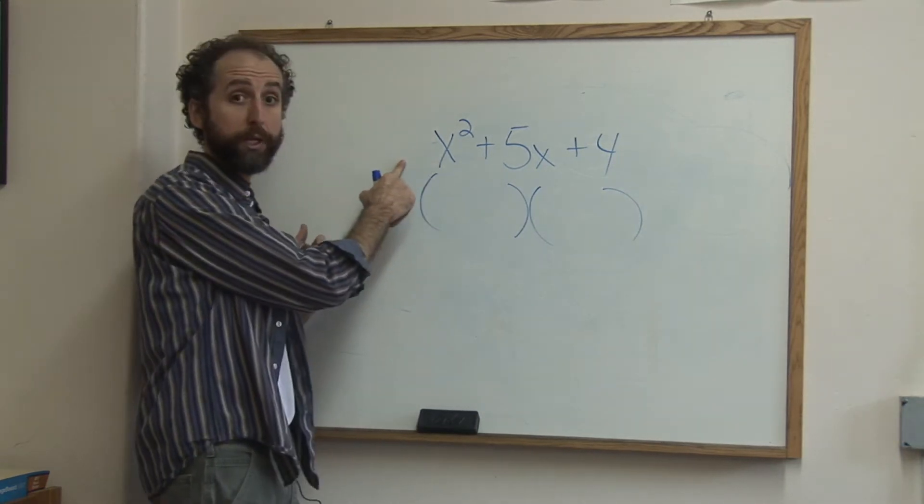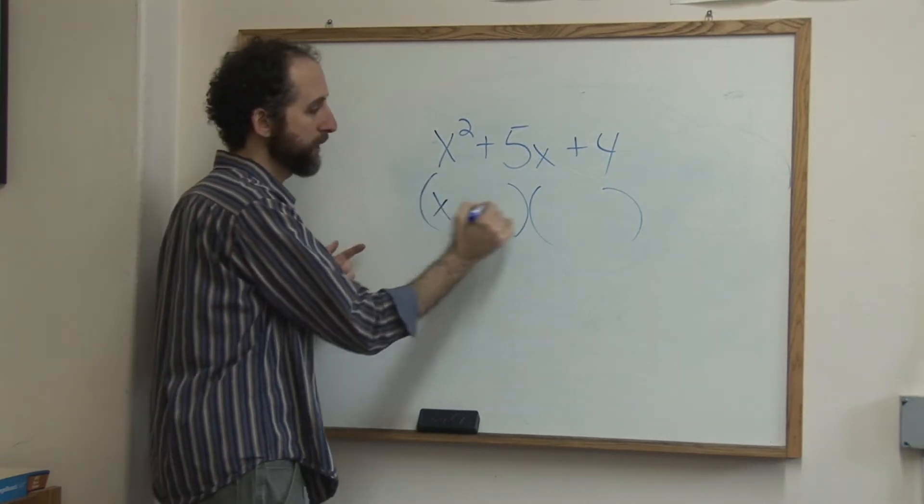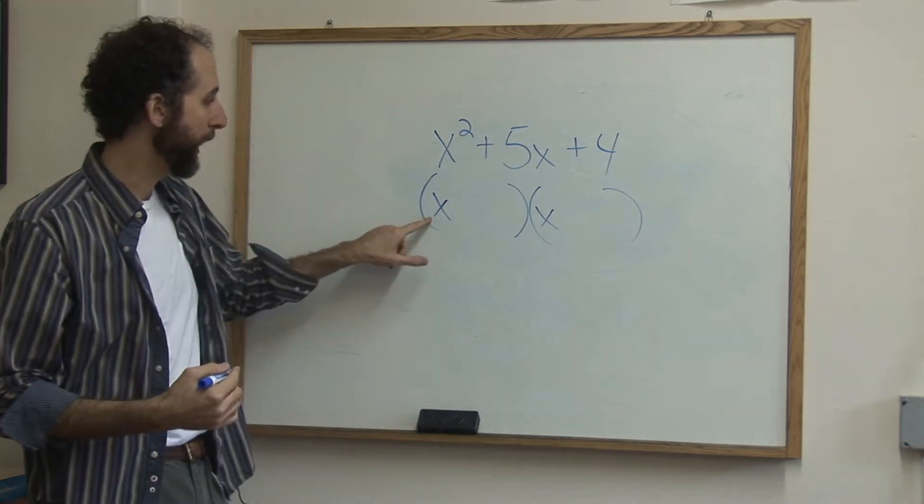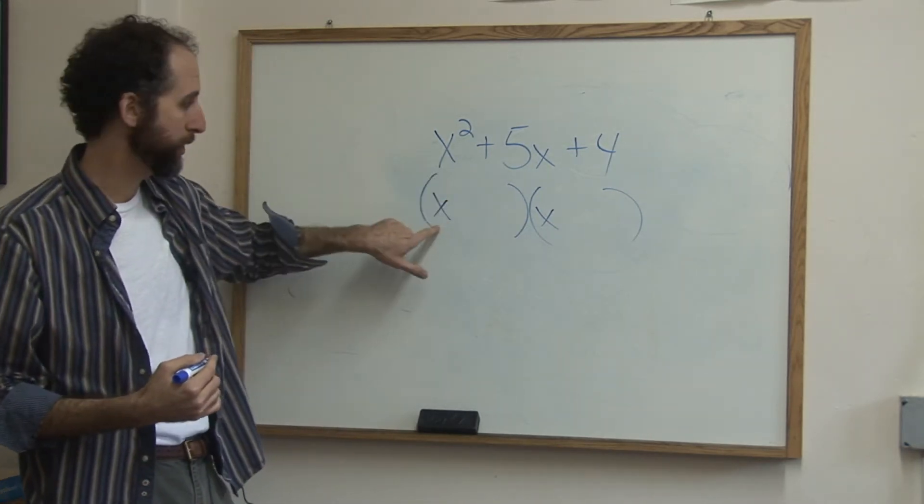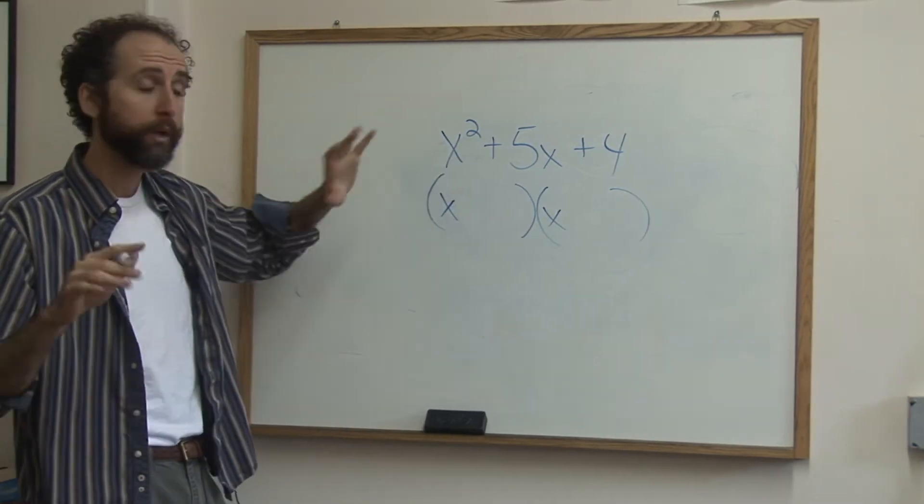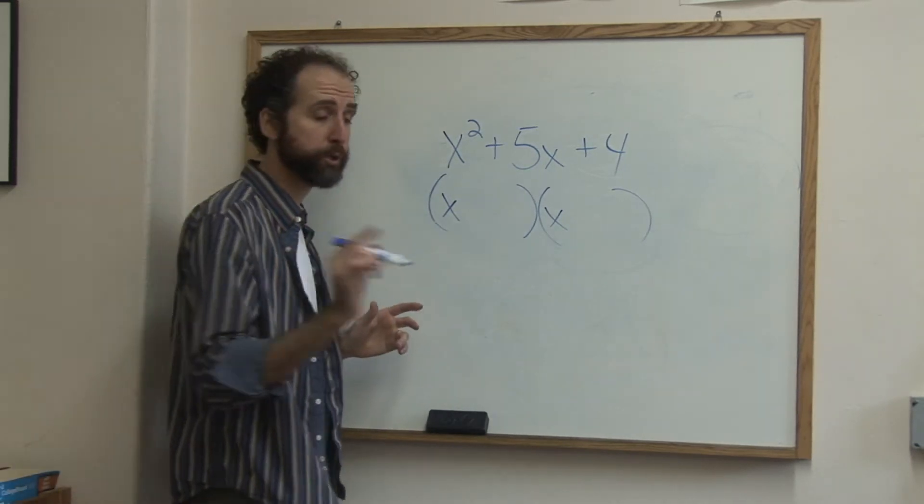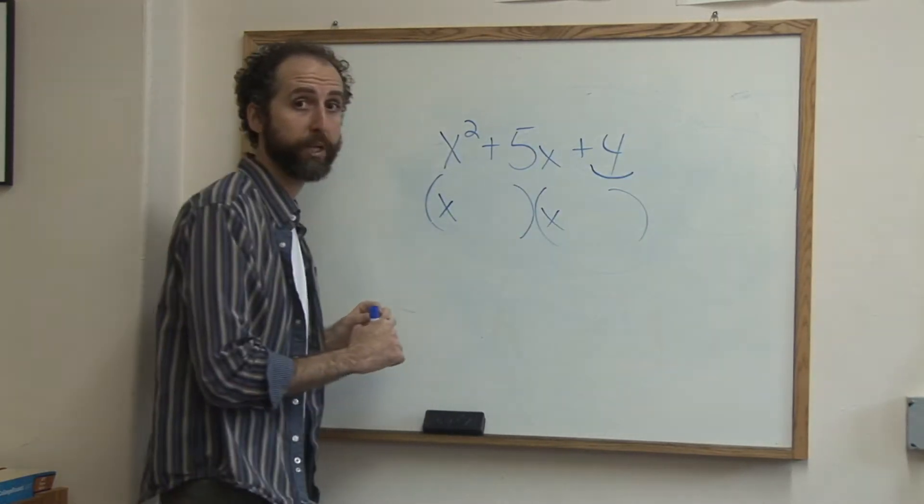When there's no number in front of the x squared, you're always going to have x and x here. That's because x times x is x squared, and these two terms multiply to be that. Now you need to ask yourself what numbers multiply to give me this 4. That's the next step.